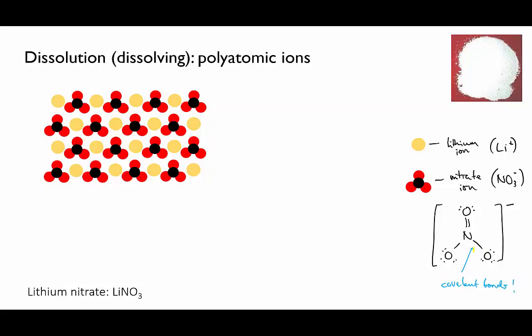So in the solid crystal of lithium nitrate, the ions are arranged alternately so that the positive lithium ions have maximum electrostatic attraction with the negative nitrate ions.